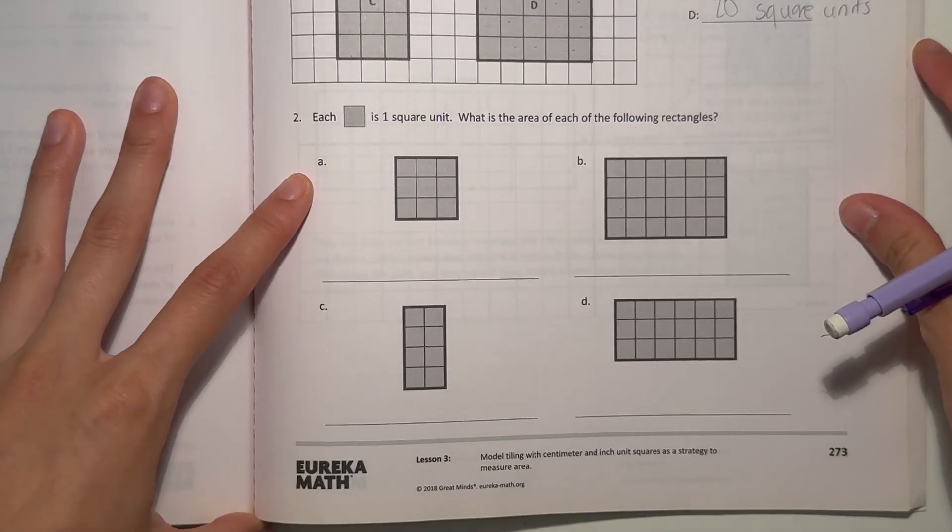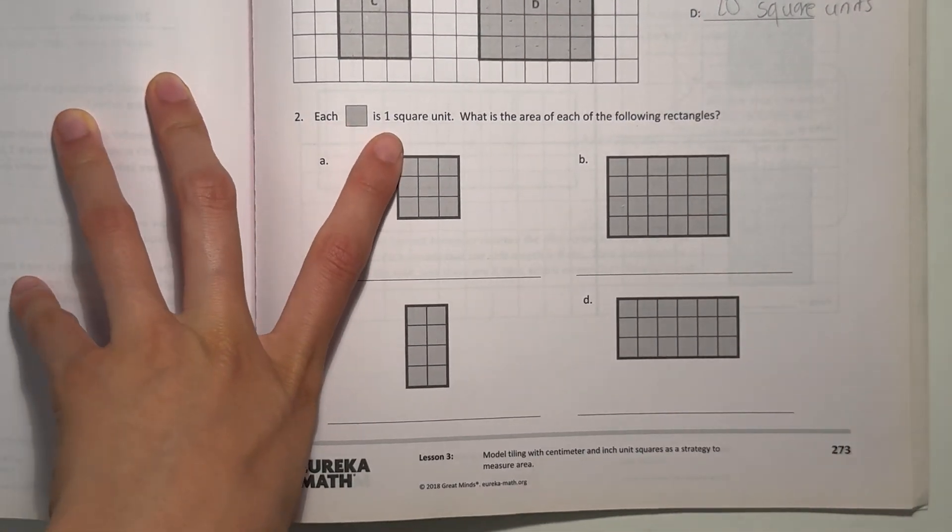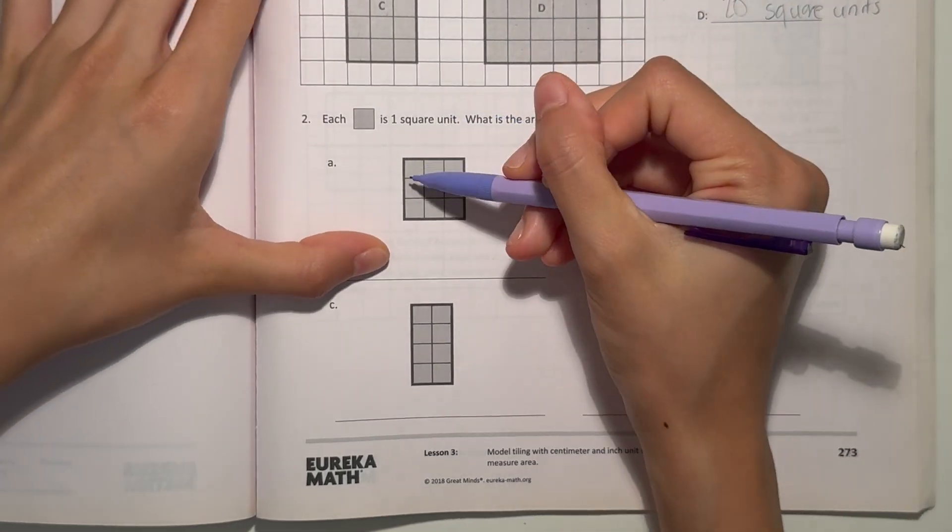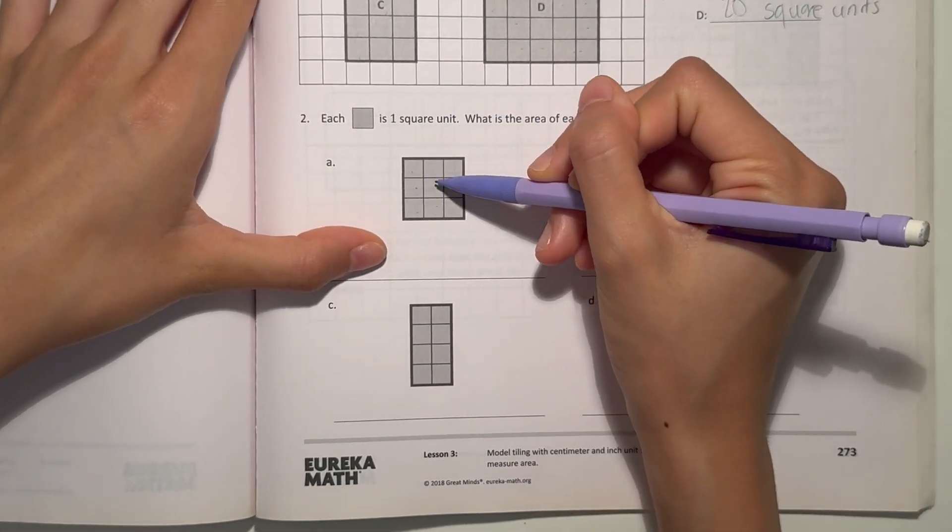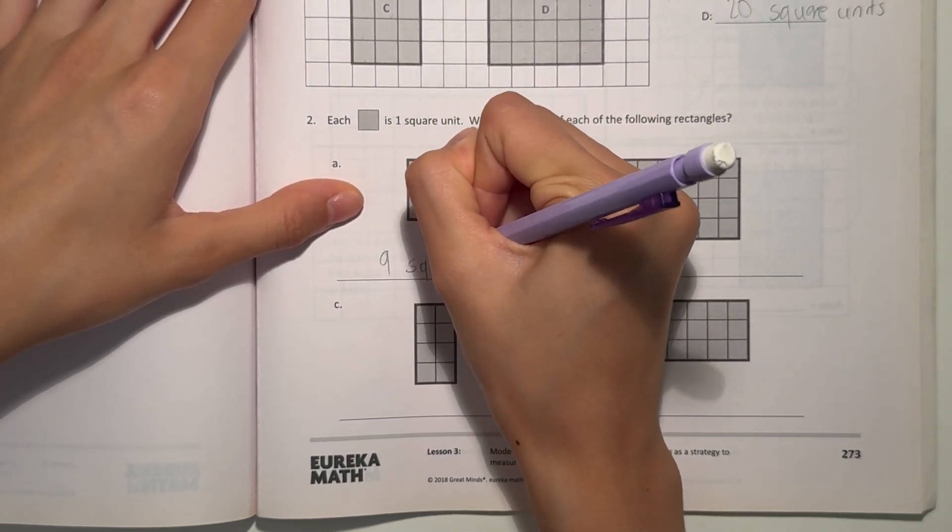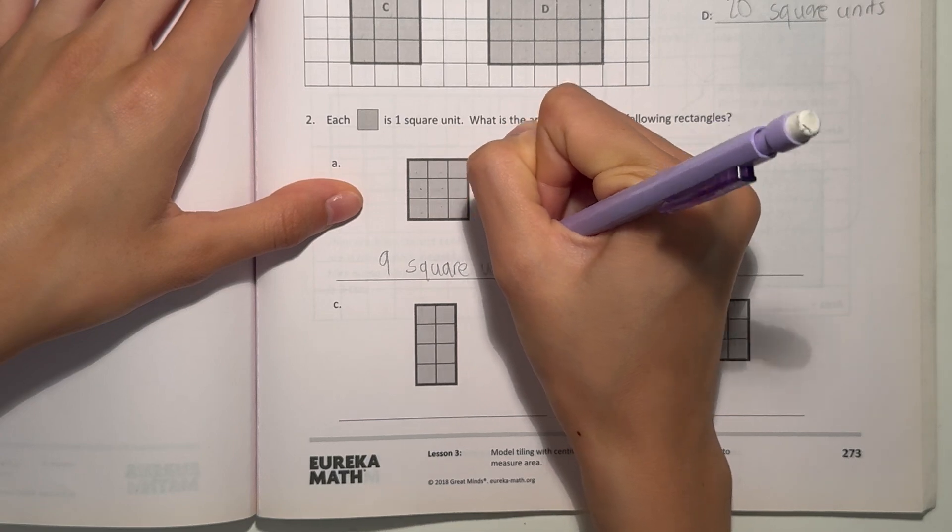Alright, now number 2, each square is 1 square unit. What's the area of each of the following rectangles? A, there's 1, 2, 3, 4, 5, 6, 7, 8, 9. That's 9 square units.